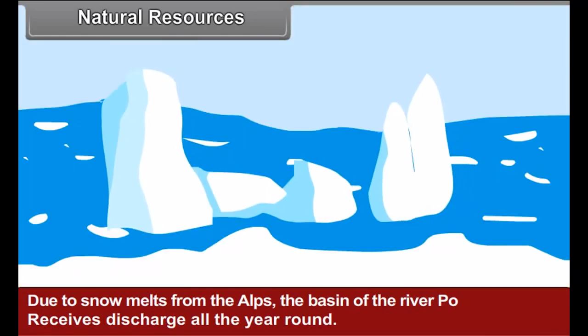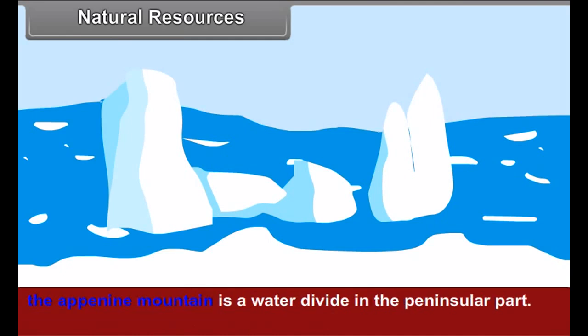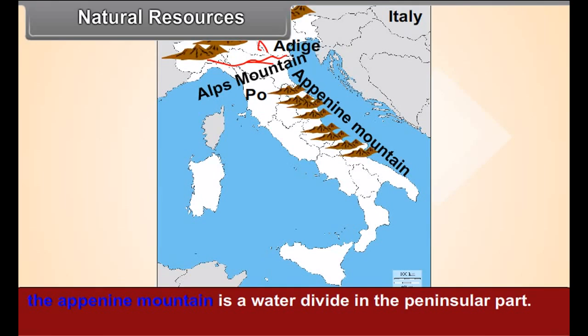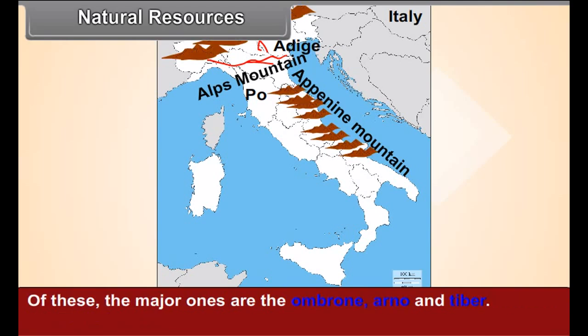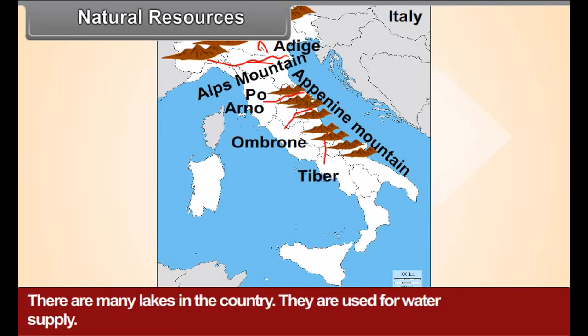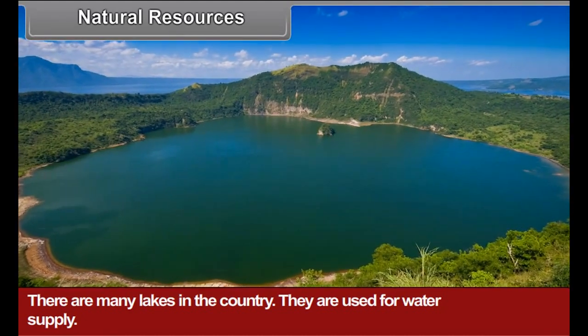The Apennine mountain is a water divide in the peninsular part. A number of rivers originate in this mountain and flow towards the east and west. Of these, the major ones are the Arno and Tiber. There are many lakes in the country, which are used for water supply.